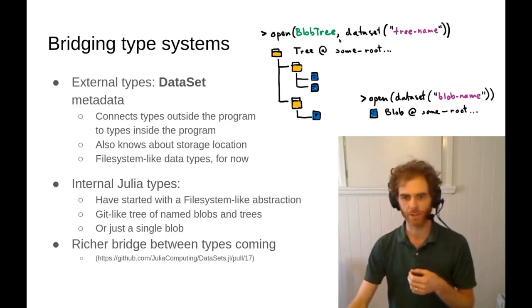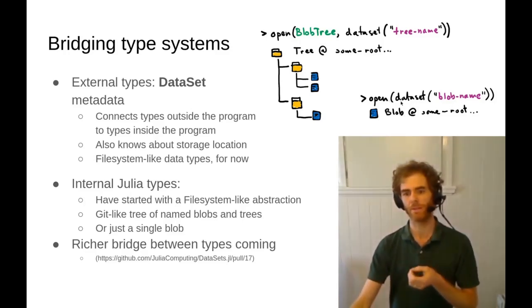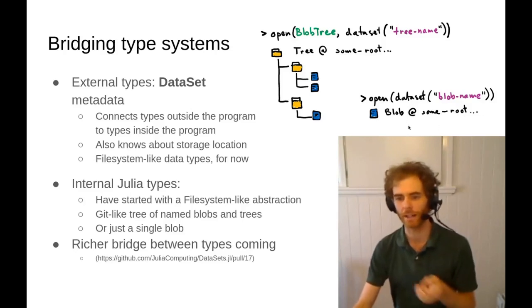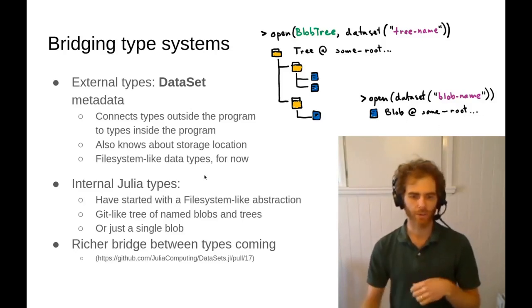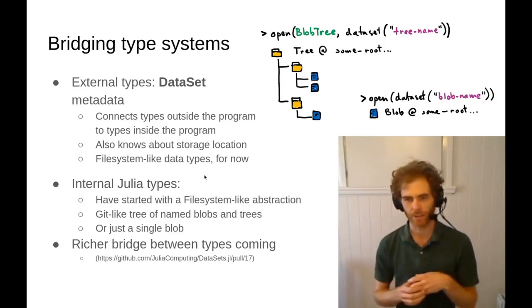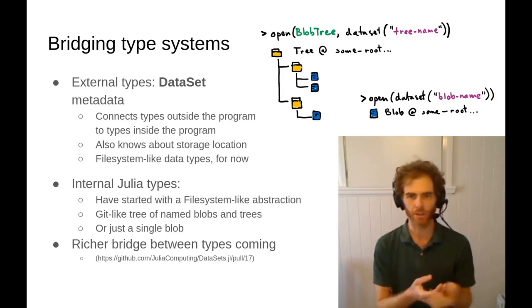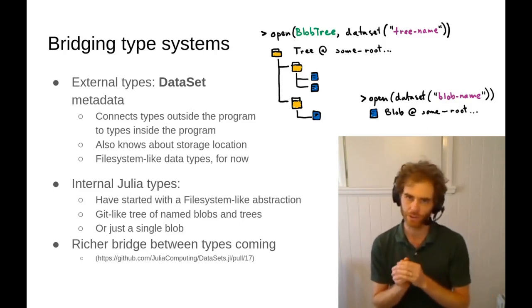If you want, you can leave this Julia type off and there will be a default. So for instance, if you have a single blob, you could open your dataset called blob name and you would get a blob out. We've started with some file system-like abstractions for talking about the data outside your program, but I'd like to have a much richer system for talking about that.